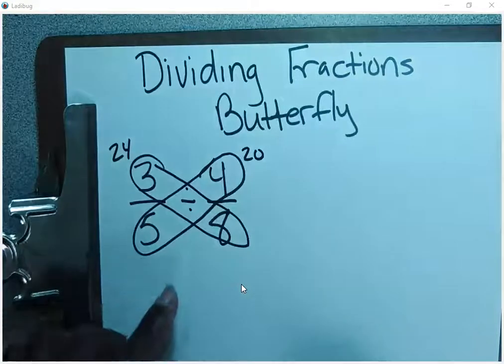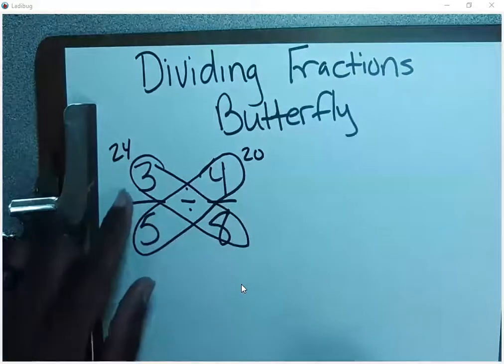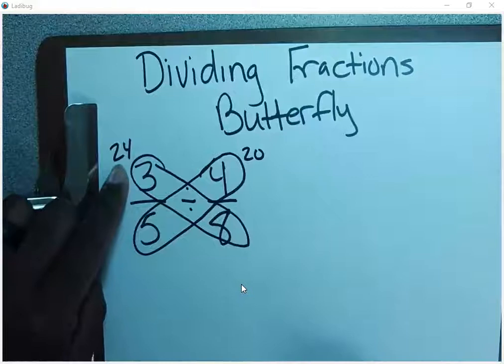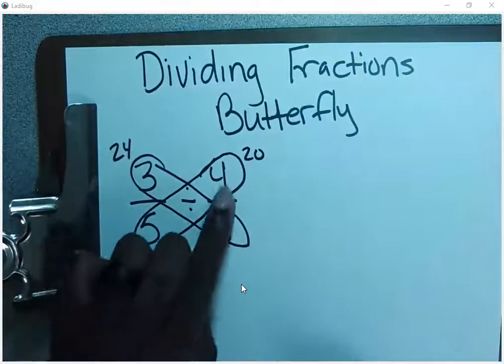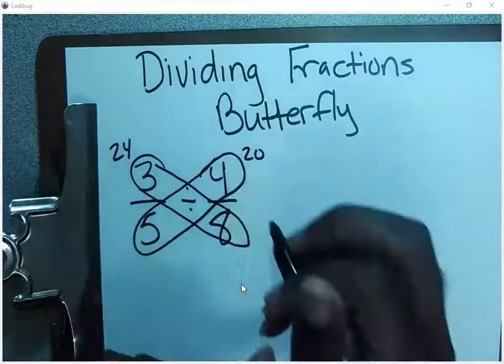Anytime you're doing this, your number is going to go above the natural numerator. So three times eight, 24, goes there. Four times five, 20, goes here. So now let's put it together.